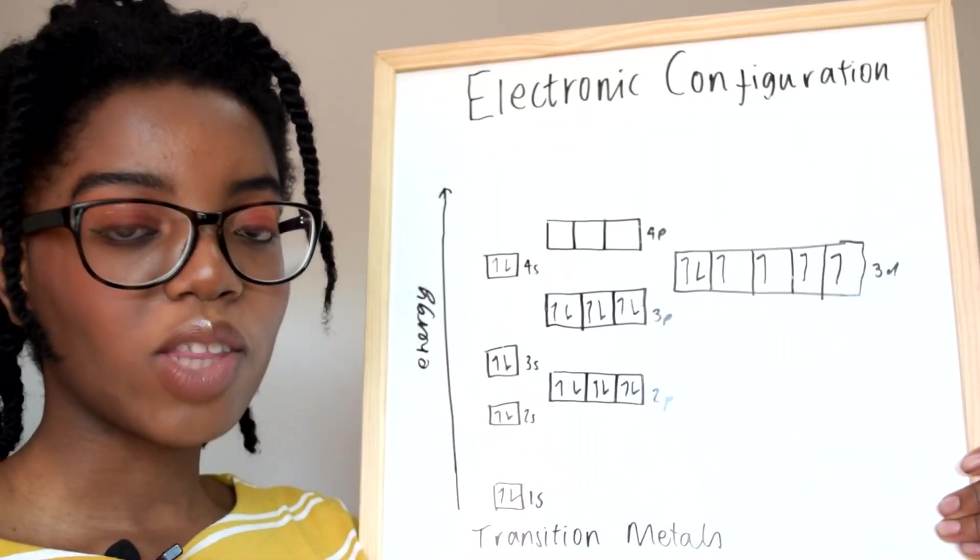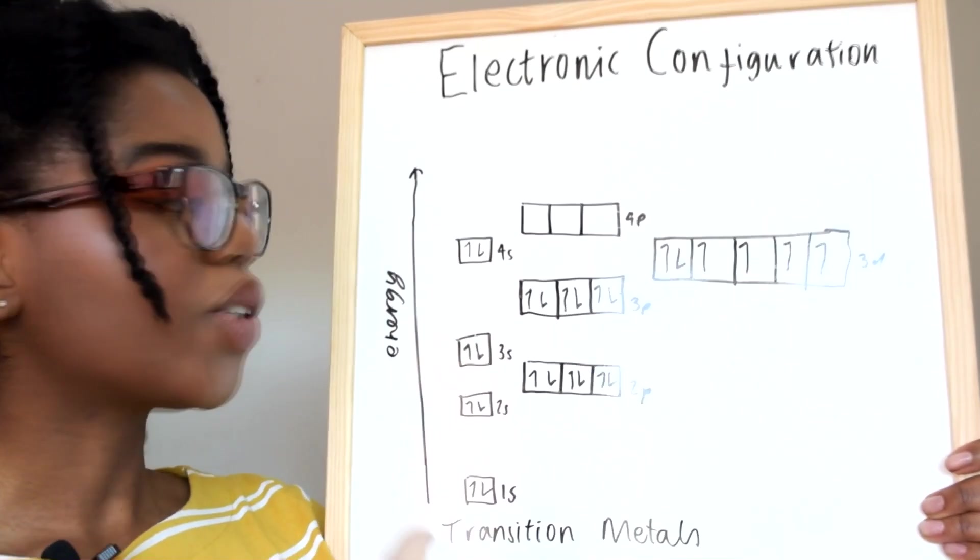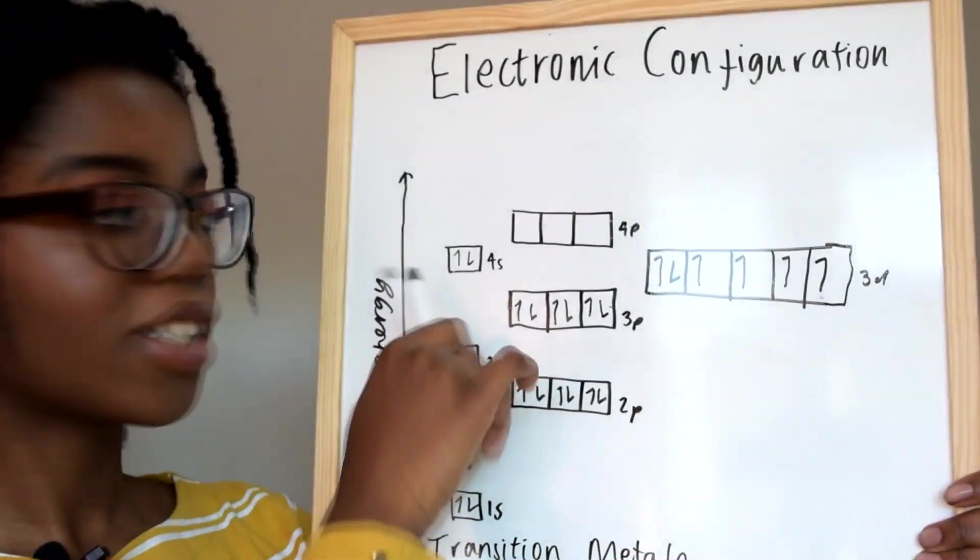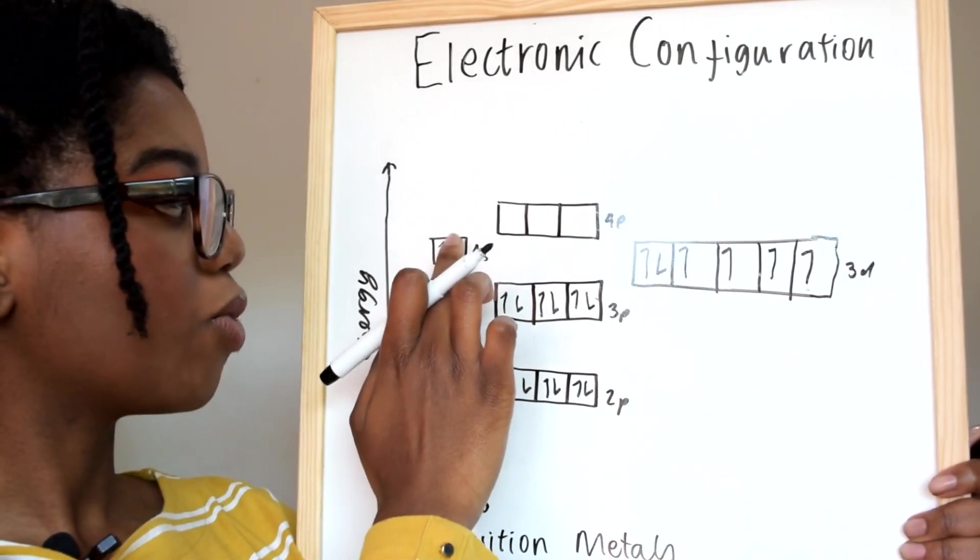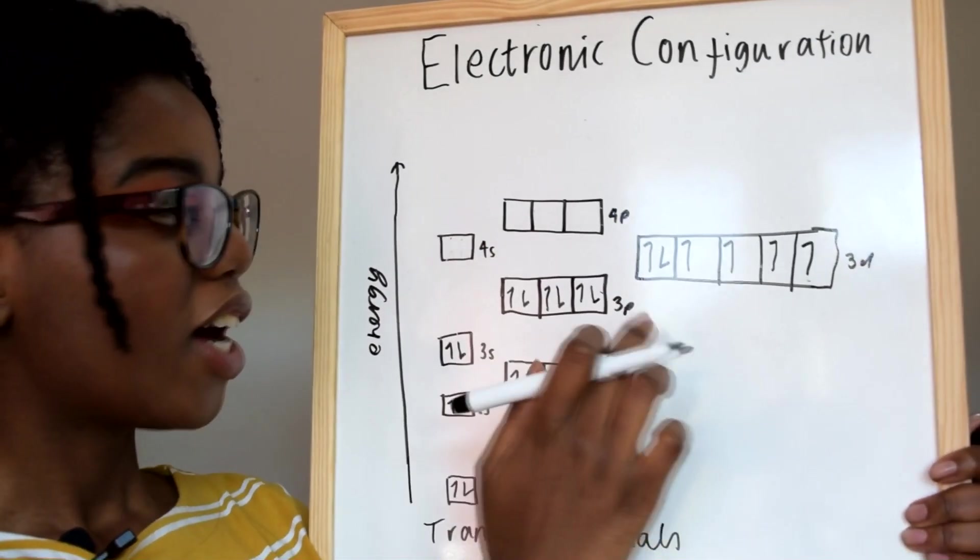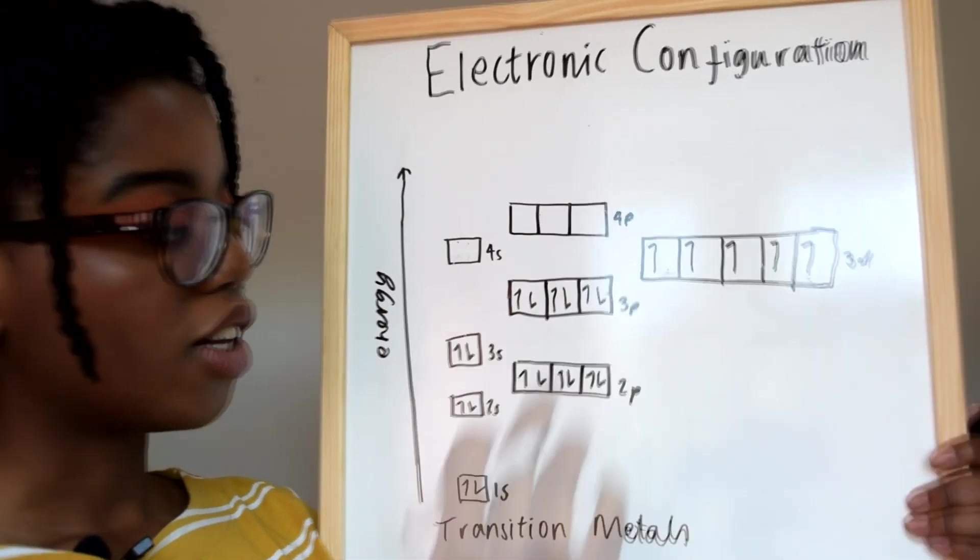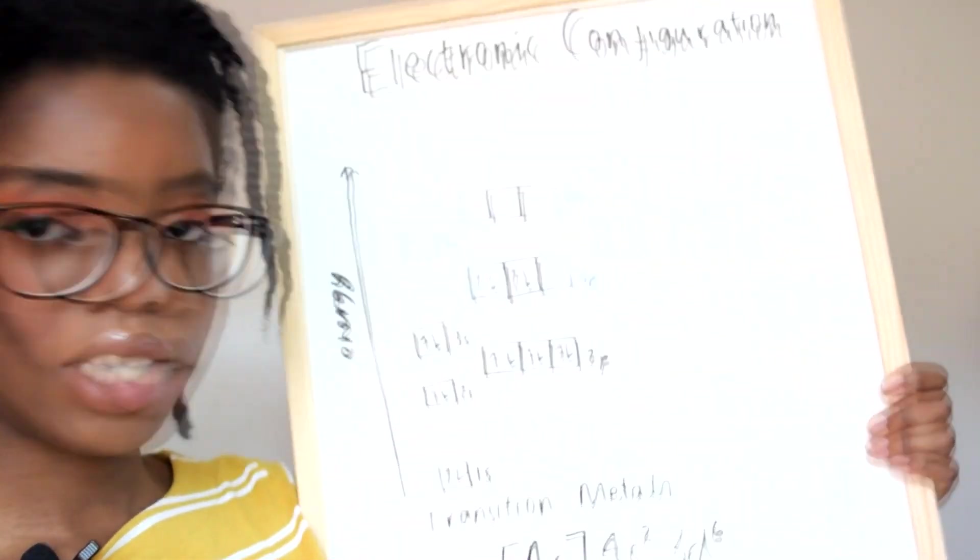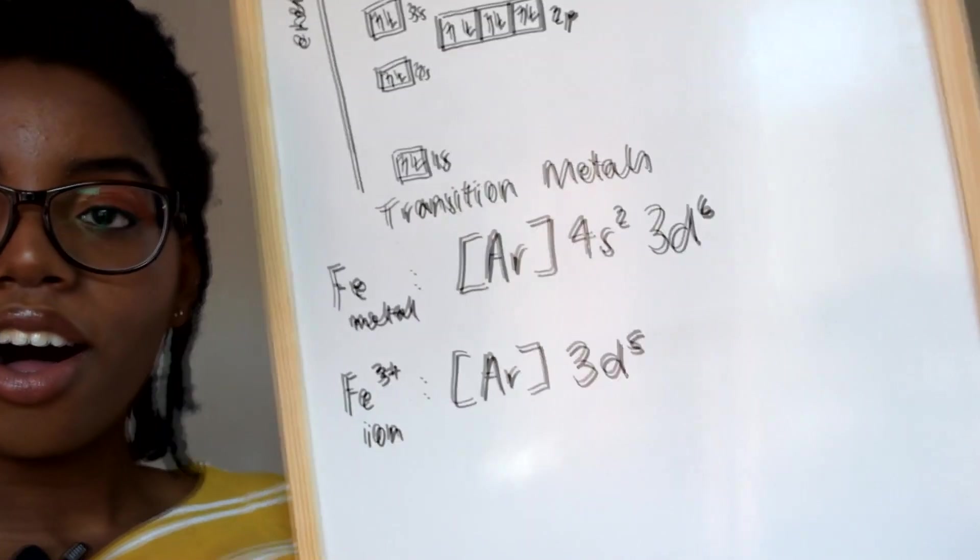From iron metal to Fe3+, to lose the electrons we take them from the 4s orbital first. That would just be removing one, removing two, and then removing another. That would just form a more stable 3+ iron.